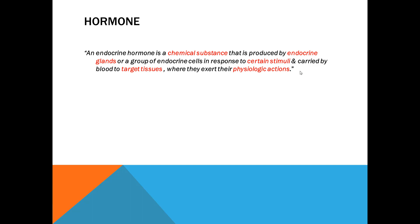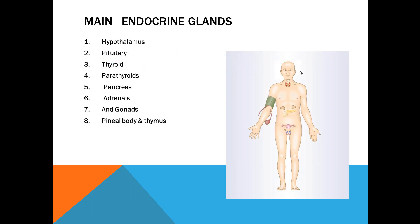An endocrine hormone is a chemical substance that is produced by endocrine glands or a group of endocrine cells in response to certain stimuli and carried by blood to the target tissues where they exert their physiological actions.